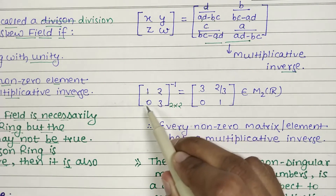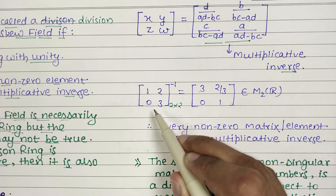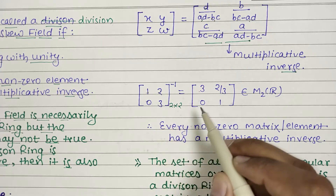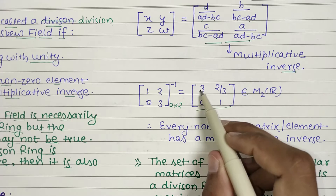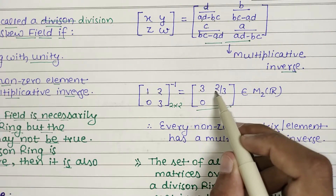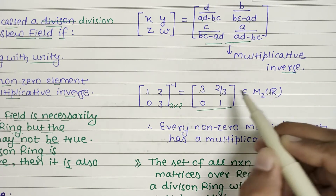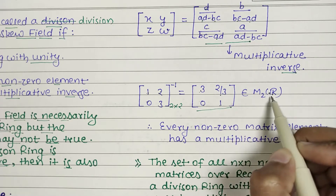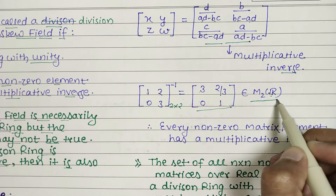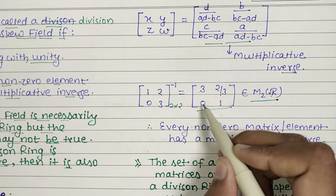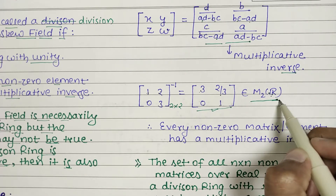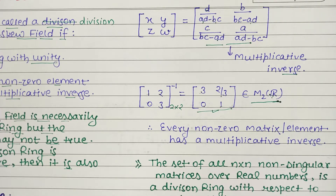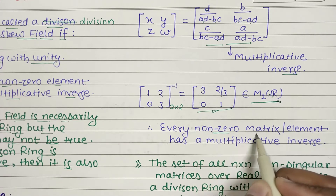The inverse comes out to be [1 −2/3; 0 1/3]. I used the same element that was used in the integer matrix question earlier. In the integer case, two-thirds (2/3) does not belong to integers, so the inverse did not exist there. But here, 2/3 belongs to real numbers, 3 belongs to real numbers, 0 belongs to real numbers, 1 belongs to real numbers — so the entire inverse matrix belongs to M₂(ℝ).